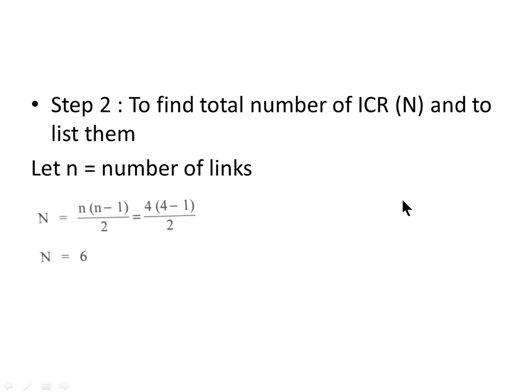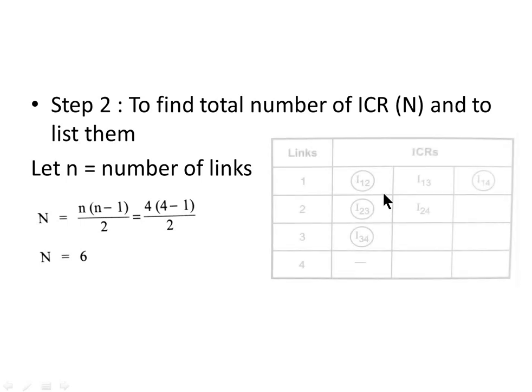Let small n be the total number of links. Then capital N, that is the total number of ICRs, can be found using the formula N = n(n−1)/2. By substituting n = 4, we get the total number of ICRs equal to 6. So we have to locate 6 ICRs.